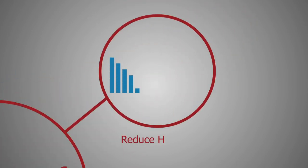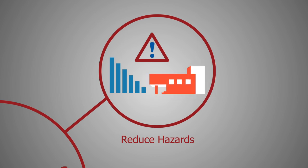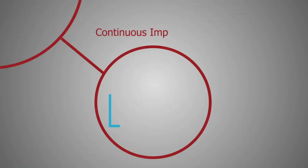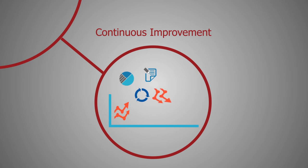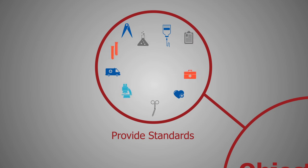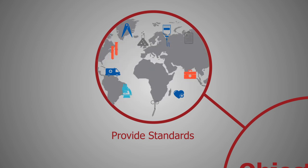Objectives of OSHAD SF: Reduce the hazards and risks arising from various activities in the workplace. Encourage continuous improvement in work processes to reduce occupational incidents and injuries. Provide occupational health and safety standards necessary to comply with applicable international standards in this area.